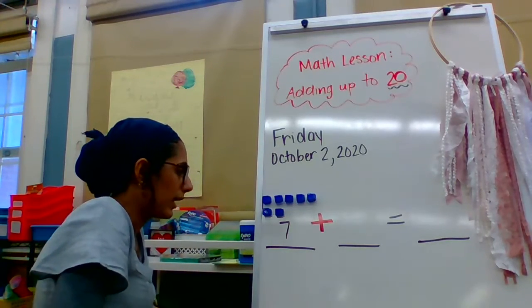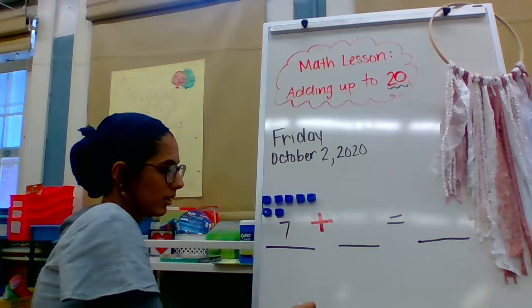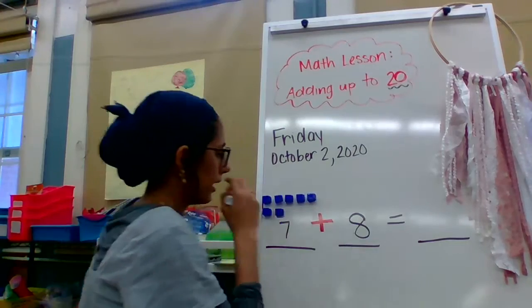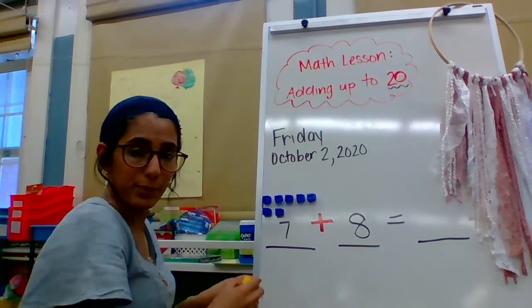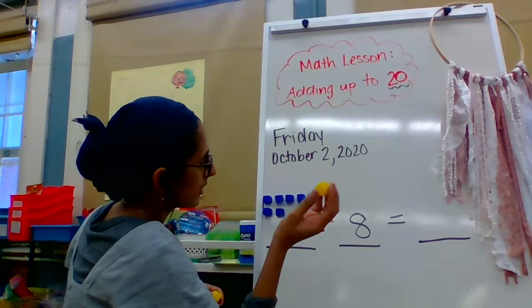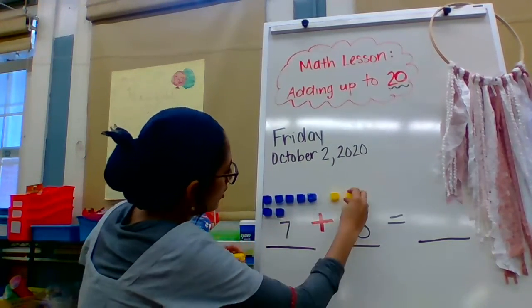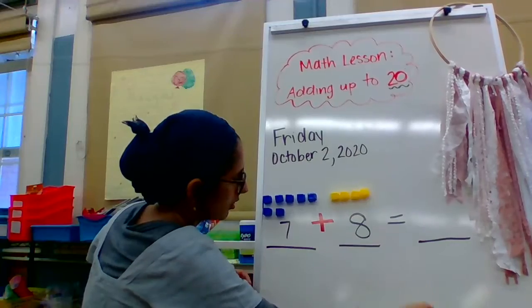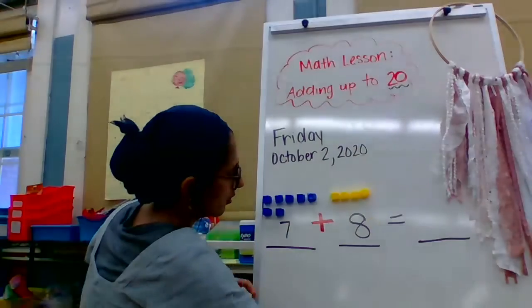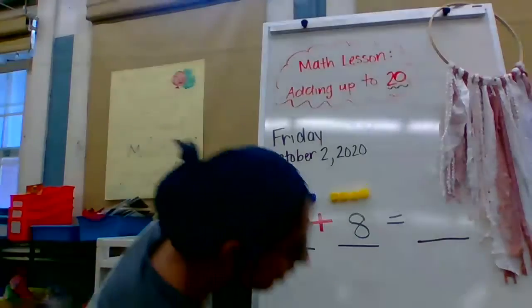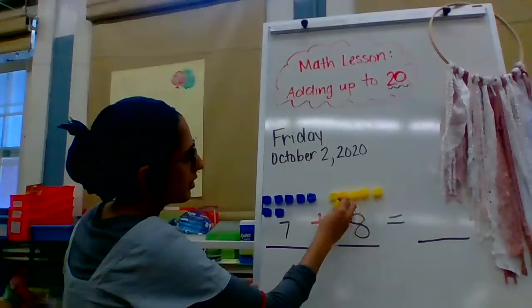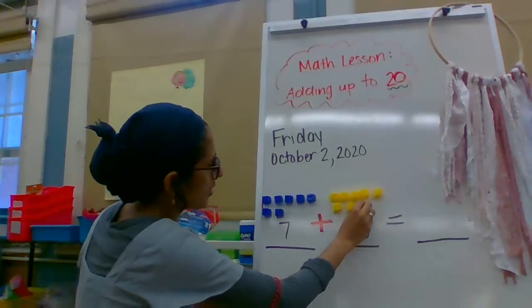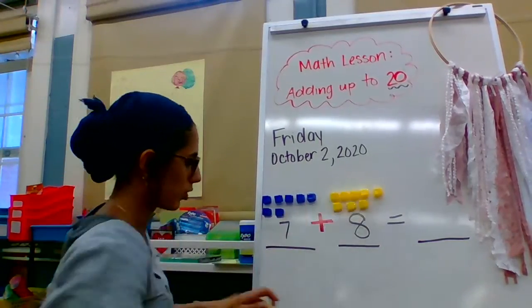All right. Now I want to add seven plus, let's do seven plus eight. Getting big numbers now. So I'm going to go ahead and put my eight yellow counters here. So count with me as I put them on. Ready? One, two, three, four, five, six, seven, and eight. We are going to make a giant cube train over here.